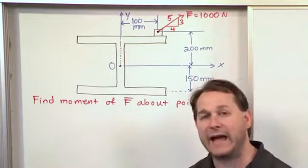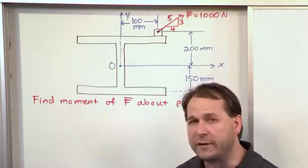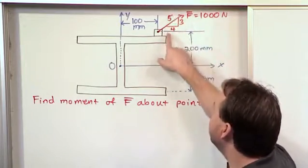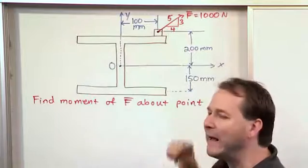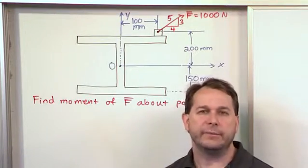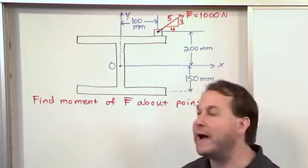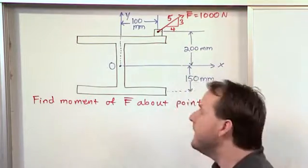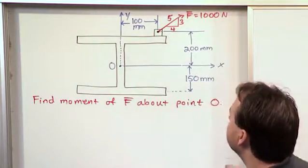Now we're not actually given the angle in the problem, which is common in mechanics. Sometimes you're given the angle, sometimes you're not. Here we're given a little triangle representation here, 3, 4, 5. This indirectly gives you the angle there because you know with any triangle you can figure out the angle that this is pointing by doing inverse cosines or inverse sines.